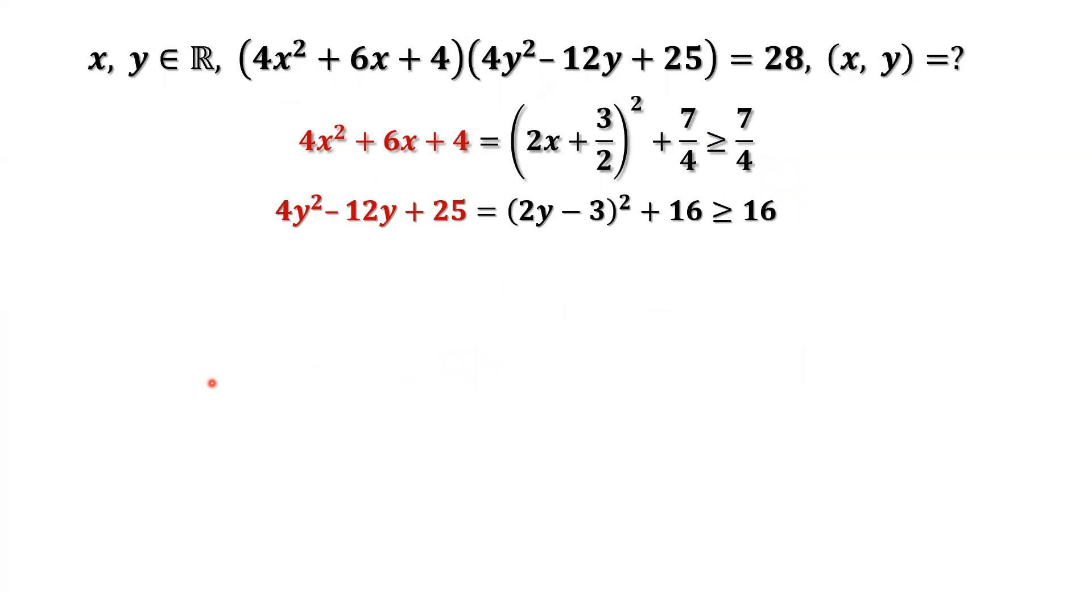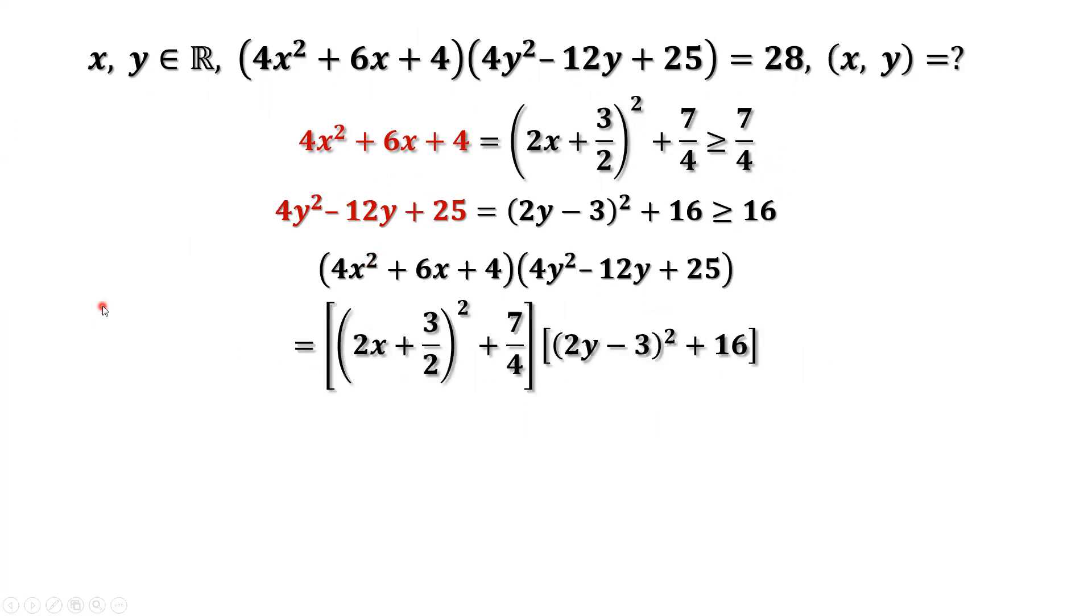We have two results here with two inequalities. Let's apply these two results to the left-hand side of the equation. Replace the first part by 2x plus 3 over 2 then squared plus 7 over 4. The second part replaced by 2y minus 3 then squared plus 16.